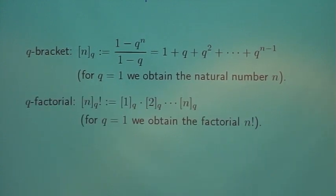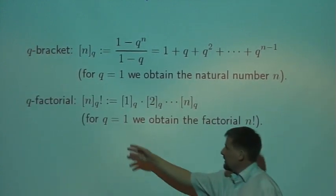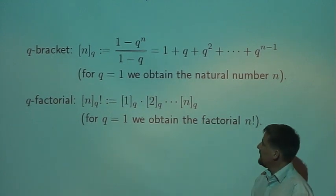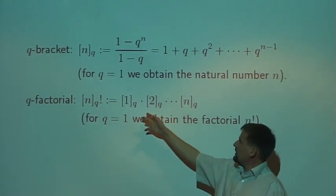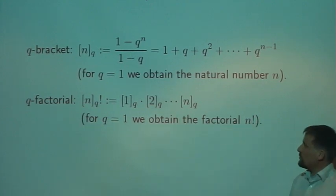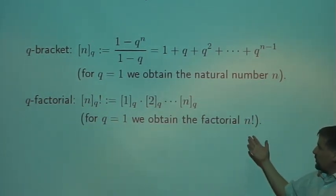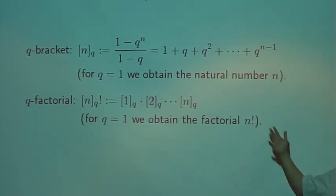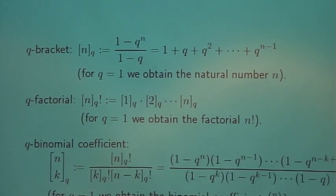The next q analog is the factorial denoted by this, and defined like in the standard case. But instead of numbers we use these q brackets. Again, we have the property if you plug in q equals one, we just obtain n factorial. And the same works for the binomial coefficient.